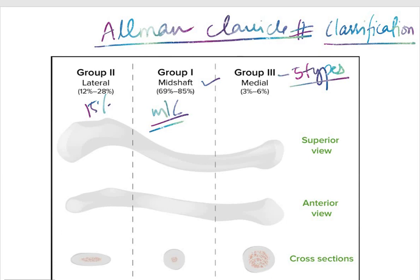Let's talk about Allman's clavicle fracture classification. It is divided into three groups. Group 1 is most common.